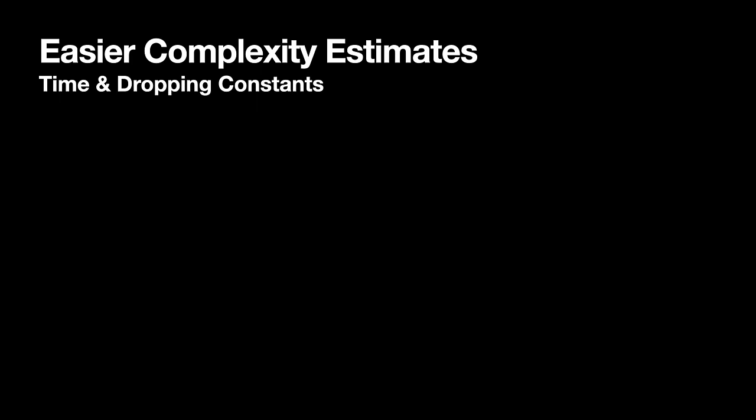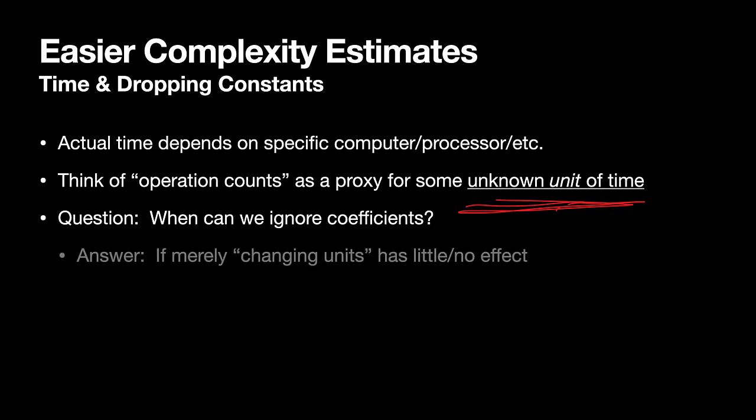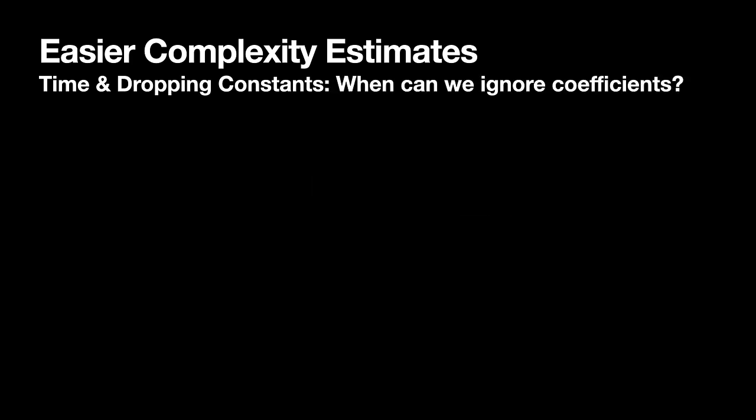So first of all, let's talk about the idea of time and dropping constants. Just to review, actual time depends on a specific computer and processor. So we've been thinking about operation counts as a proxy for time. But really the key here is we just do not know the unit of measure of time. So when can we ignore the coefficients? The basic idea of when we can ignore coefficients is if we could merely change units to make the coefficients go away. So let's look at an example of what I mean by that.